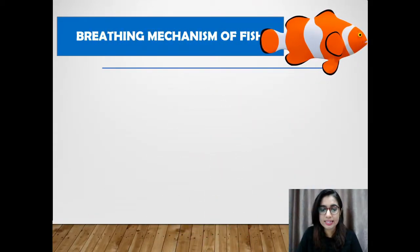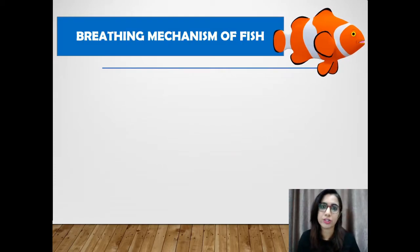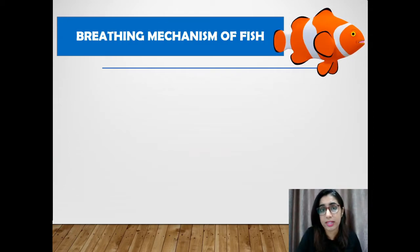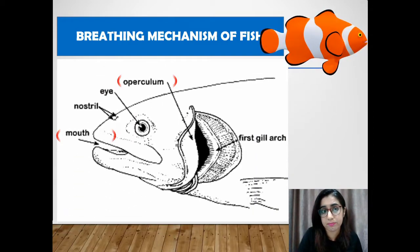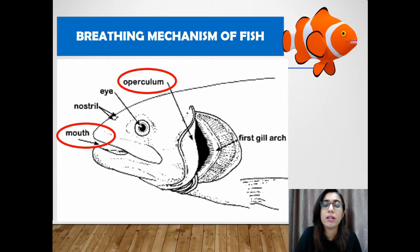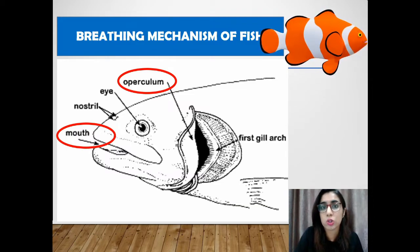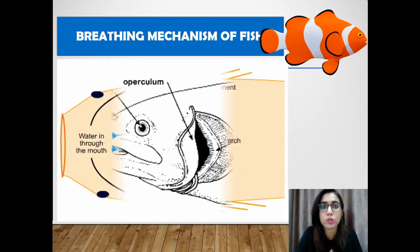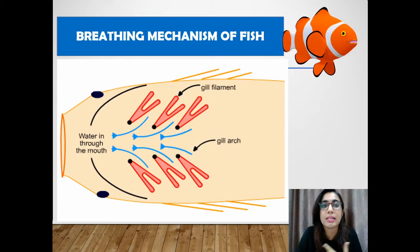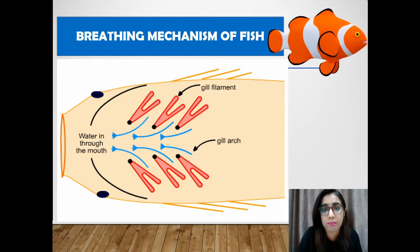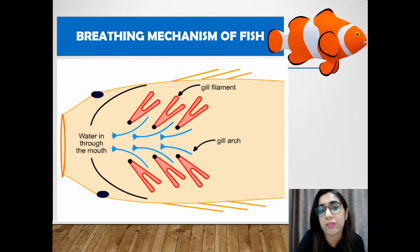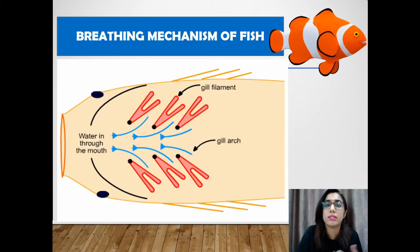The breathing mechanism of fish is aided by its mouth movement and the operculum. Mouth and operculum ventilation takes place when the fish swims by opening and closing its operculum, pushing water into the mouth and subsequently through the gills. This ventilation increases the flow of water over the respiratory surface.